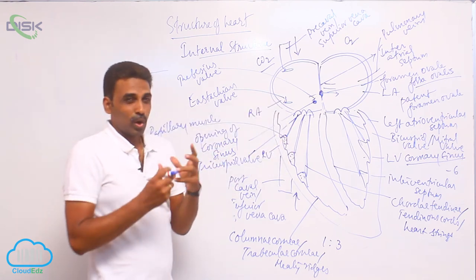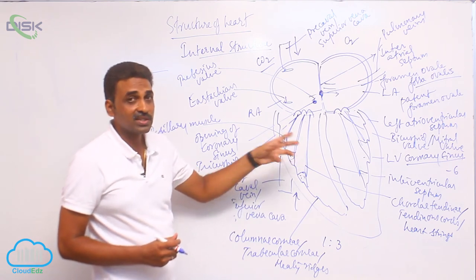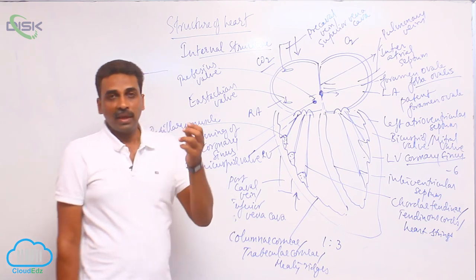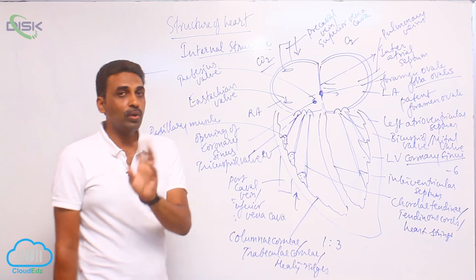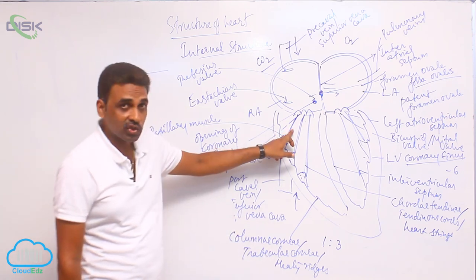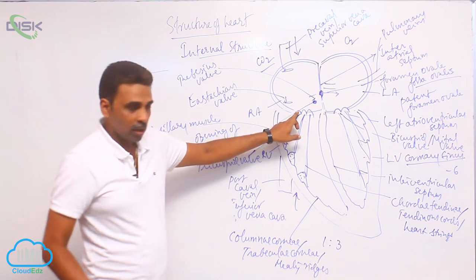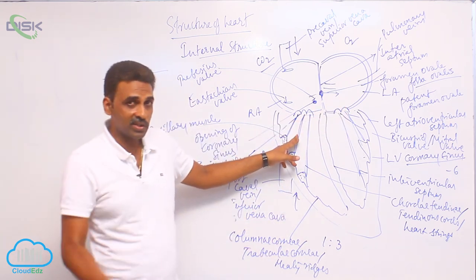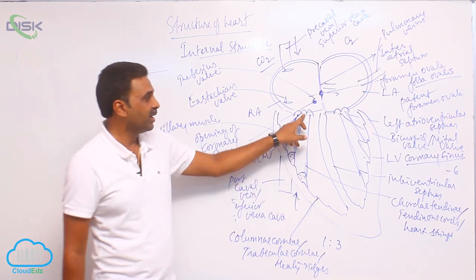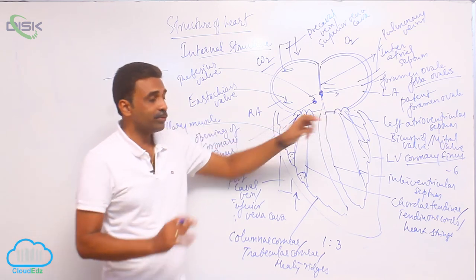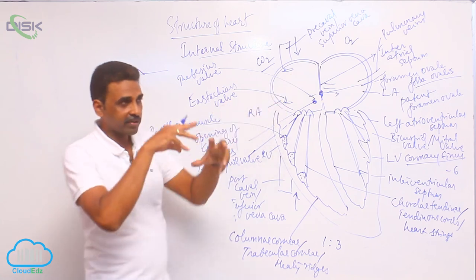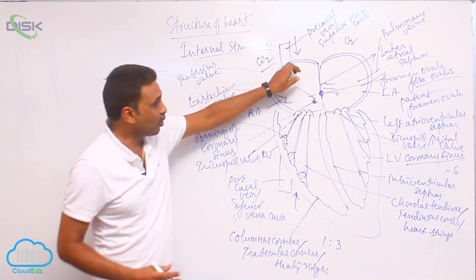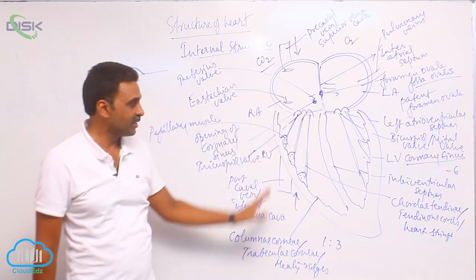Chordae tendineae are collagenous — 80% collagen fibers and 20% elastin fibers. They are tendon-like structures, where tendons are dense regular connective tissue between a bone and a muscle. They connect the papillary muscles with the tricuspid valve on the right side and with the bicuspid valve on the left side. Their function is to prevent the tricuspid and bicuspid valves from opening too far into the atria when the atria contract.